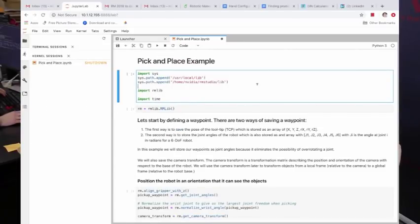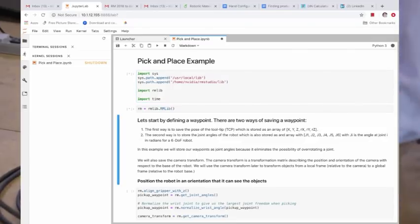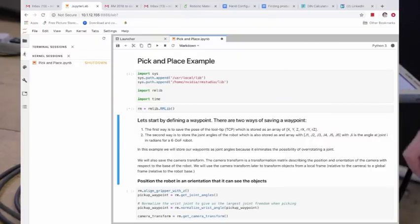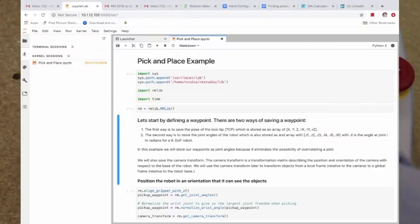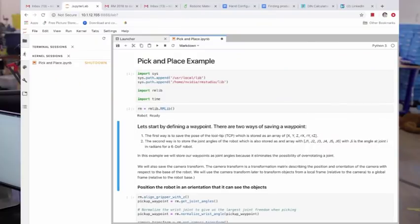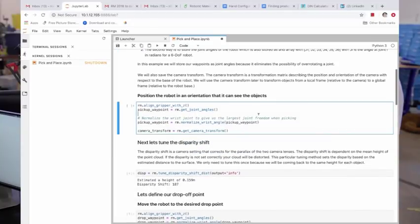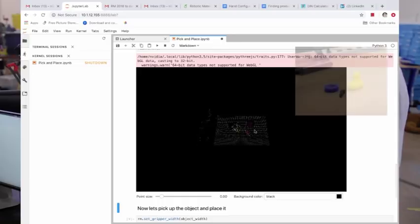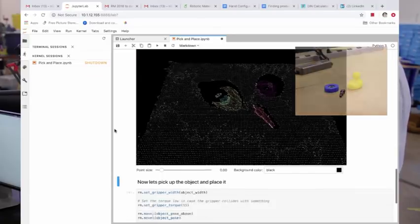You can now execute your first program. In this example, the user sets two waypoints to pick up random objects from one location and transport them to another. Jupyter Lab provides a convenient way to inspect what the robot is seeing and to adjust code on the fly. The built-in Point Cloud viewer clearly shows the rubber ducky, the gear, and the metal shaft.